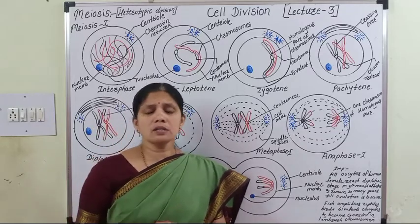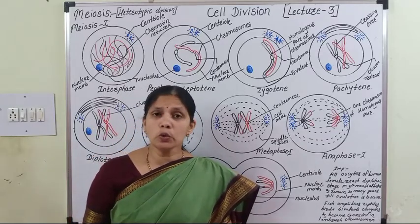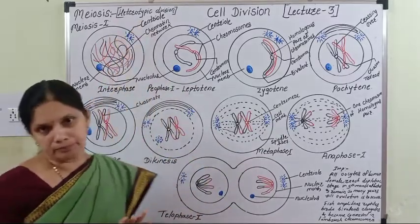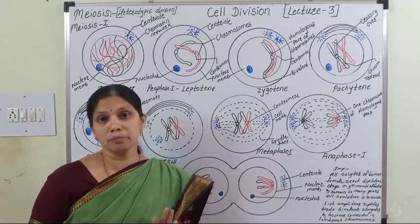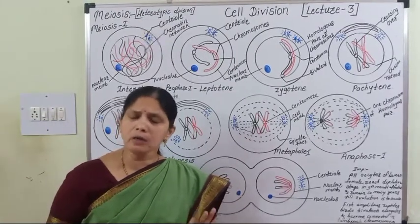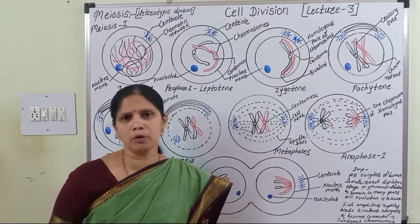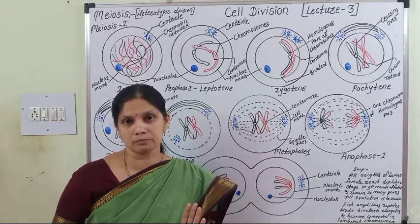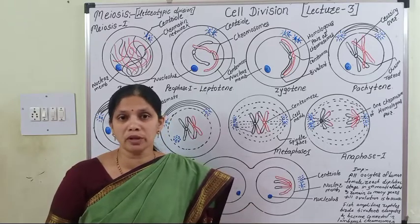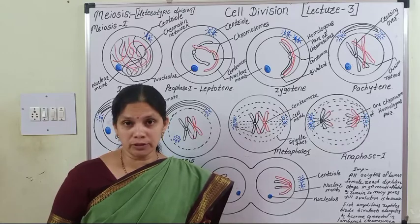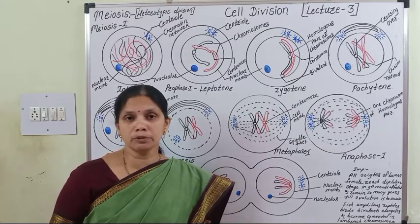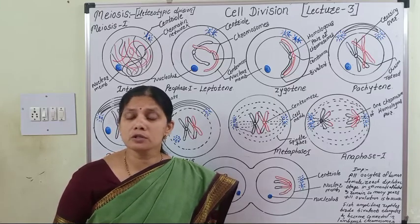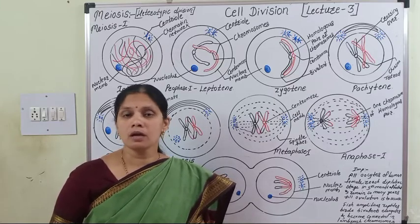Meiosis is also known as heterotypic division because at the end of meiosis, the four daughter cells formed are not exactly similar to the parental cell. The gametes formed from sex cells or germ cells are not similar to the parental cell, so it is called heterotypic division.